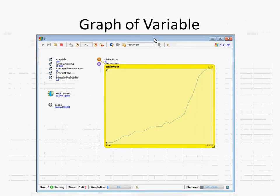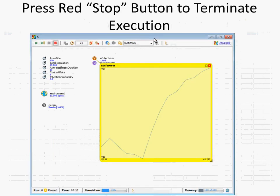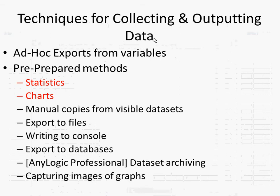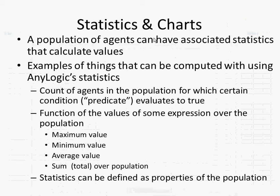We're going to take a look at some pre-prepared methods. Let's talk about statistics. A population of agents can have statistics defined for it that calculate values, and these statistics get reported by default if you click on that population. They can also be called from your code to compute values. The definition is fairly declarative: you specify the condition you want it to capture and it will count the number of people satisfying that condition, or compute the max, min, or average of a given expression.